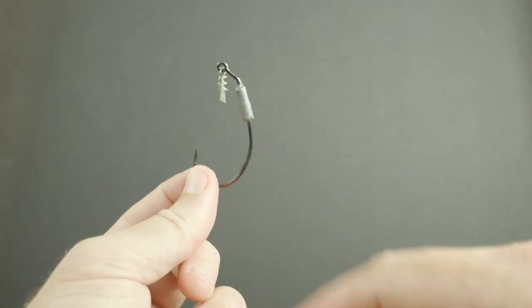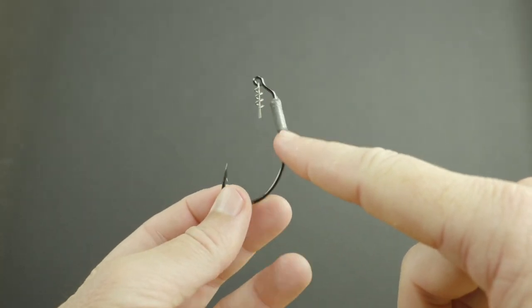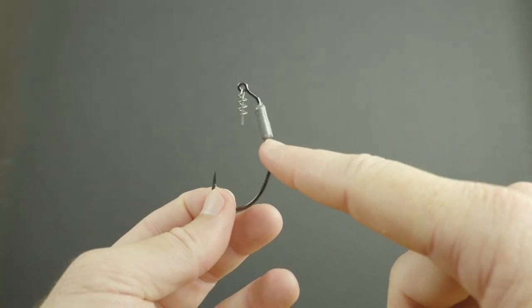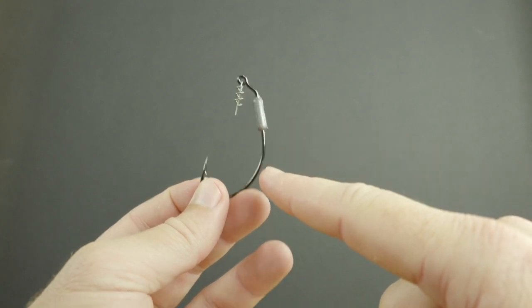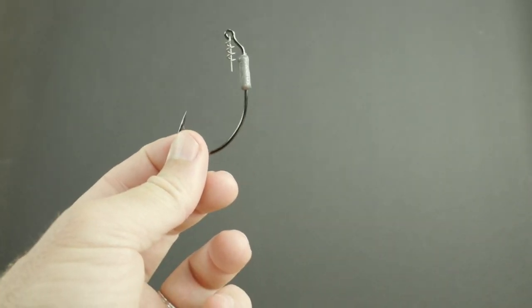It flat out works, and we have different weights on the shank. So this is an eighth ounce, we also have a sixteenth and a three eighths ounce, just so that you can customize the running depth of your lures. Extremely important to be able to customize the running depth.